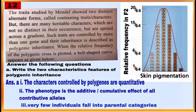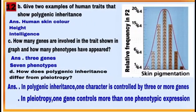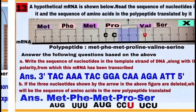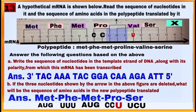Case-based question number 12 is about polygenic inheritance. After reading and observing the graph, answer questions A, B, C, and D. Case-based question number 13 shows a hypothetical messenger RNA, and based on the given structure you have to answer questions A, B, C, and D.